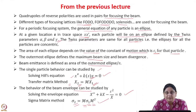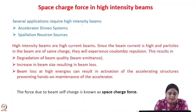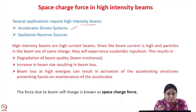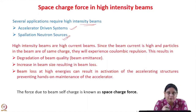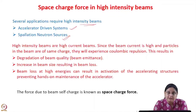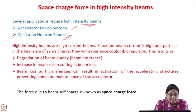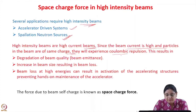Today we will study transverse beam dynamics including space charge forces. This is particularly important for high intensity beams, which are required for several applications — one is the accelerator-driven system, which needs a high current beam. Another application is spallation neutron sources, where a high intensity beam hits a target and spallation neutrons are produced. In order to have a high yield of neutrons, we need a high current proton beam. Both of these applications require very high intensity beams, and since the beam current is high and particles carry the same charge, they experience Coulombic repulsion.